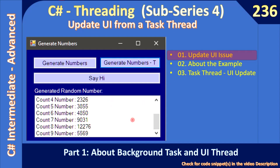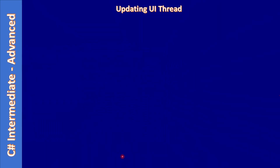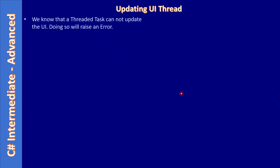First, let us discuss the UI update issue, and we will also learn about background tasks and the UI thread. We know that a threaded task cannot update the UI, and if you try to do so, you will get an exception — an error.